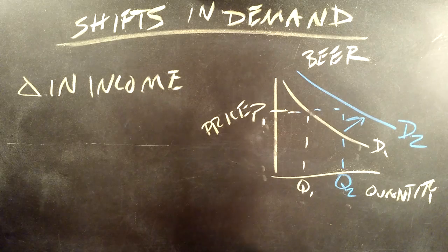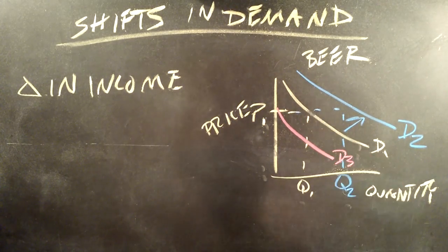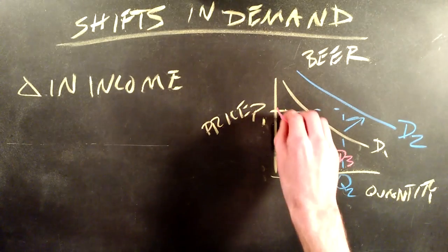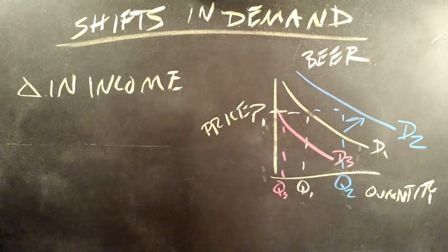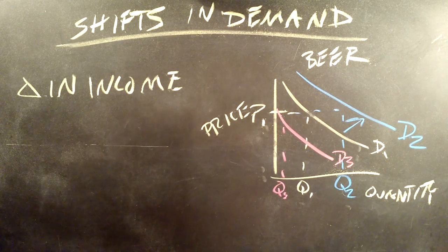If income were to decrease, the demand curve would shift from D1 into the left. We'll call this D3. If we use our original P1, we see there's a drop to Q3. So there's a change in quantity and demand based upon a negative change in income.